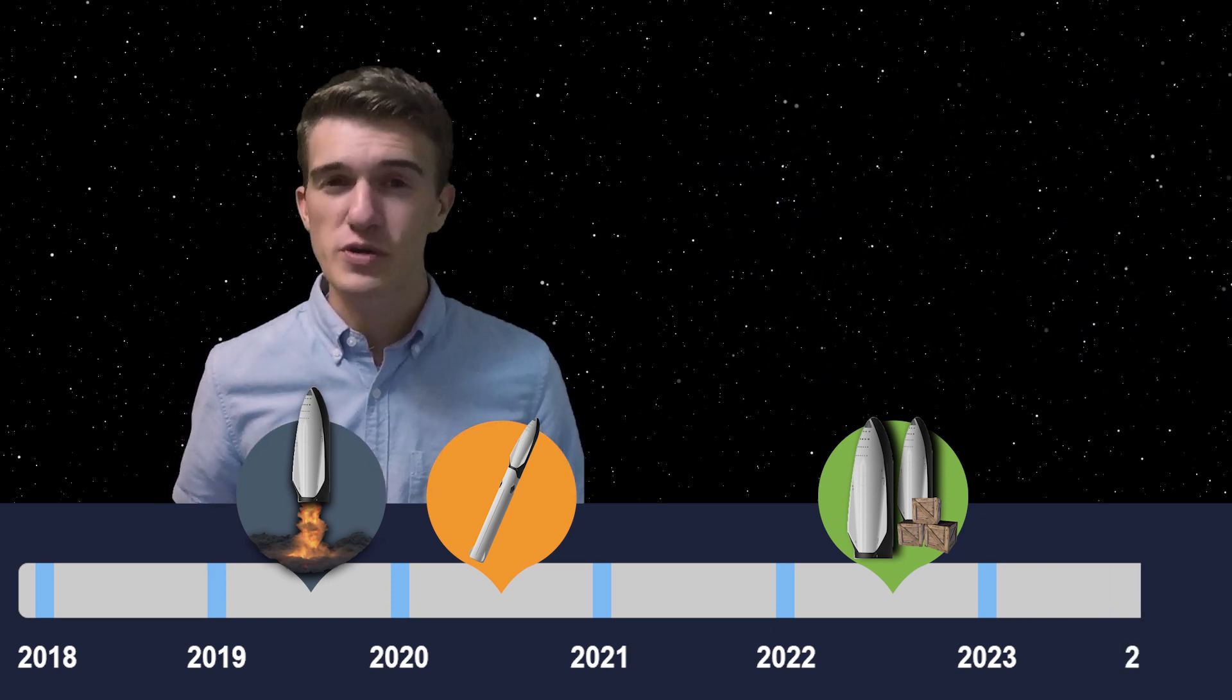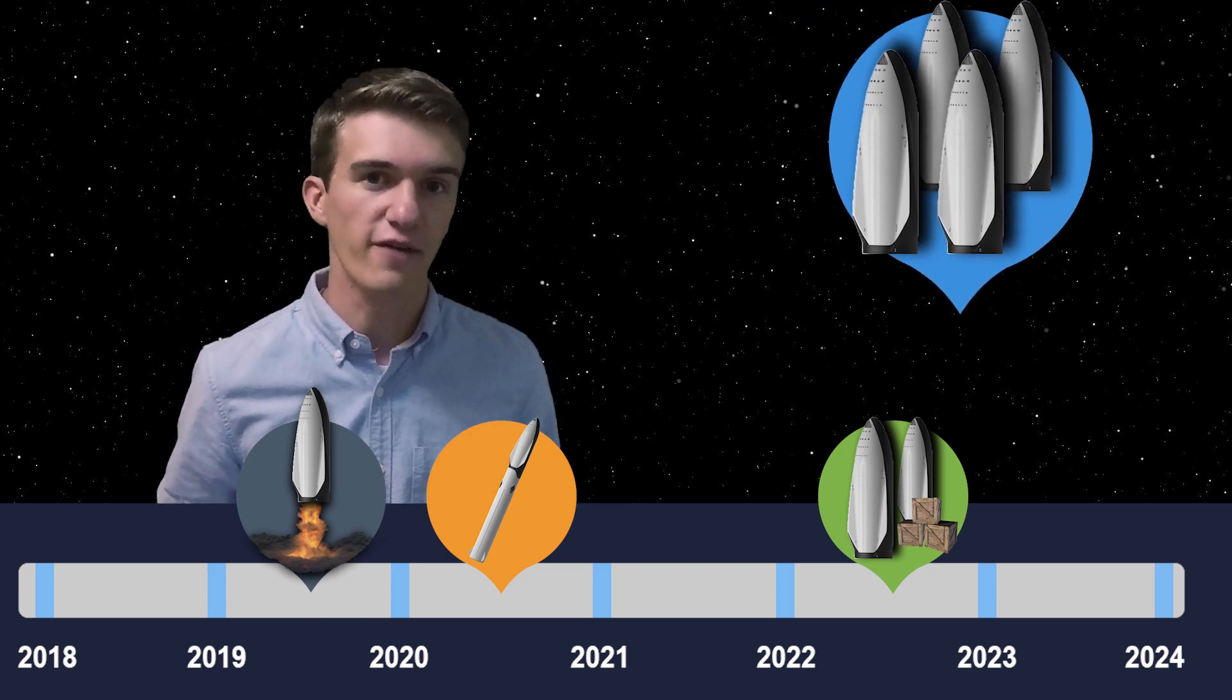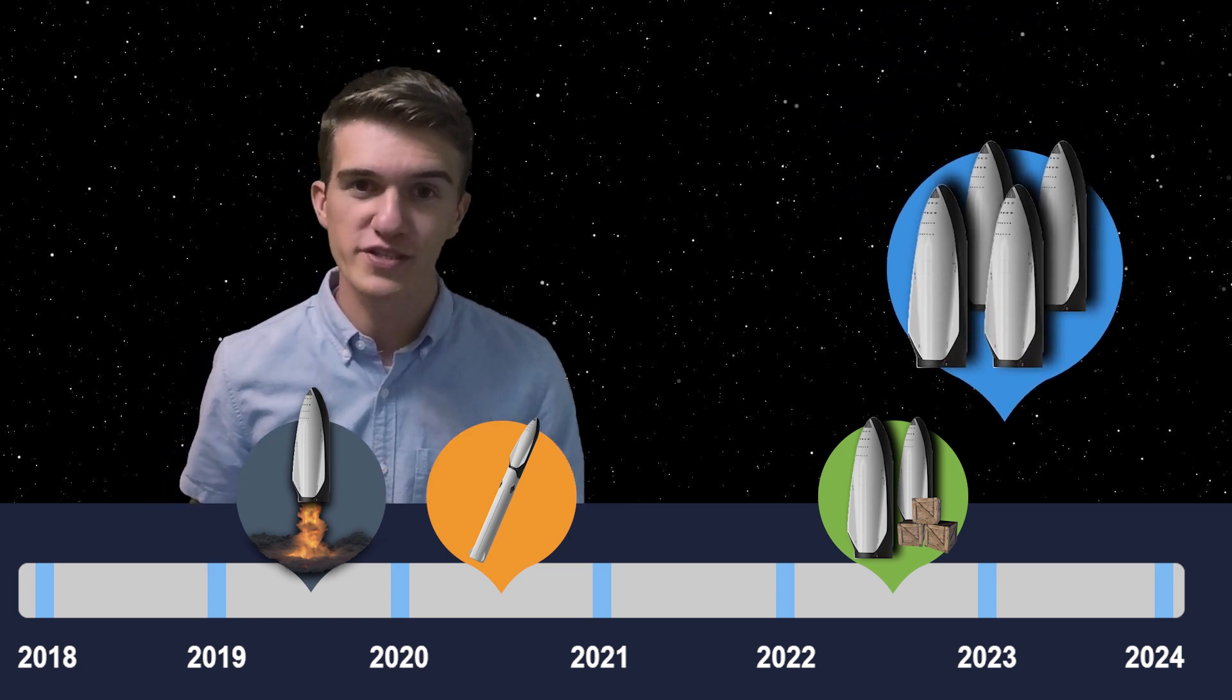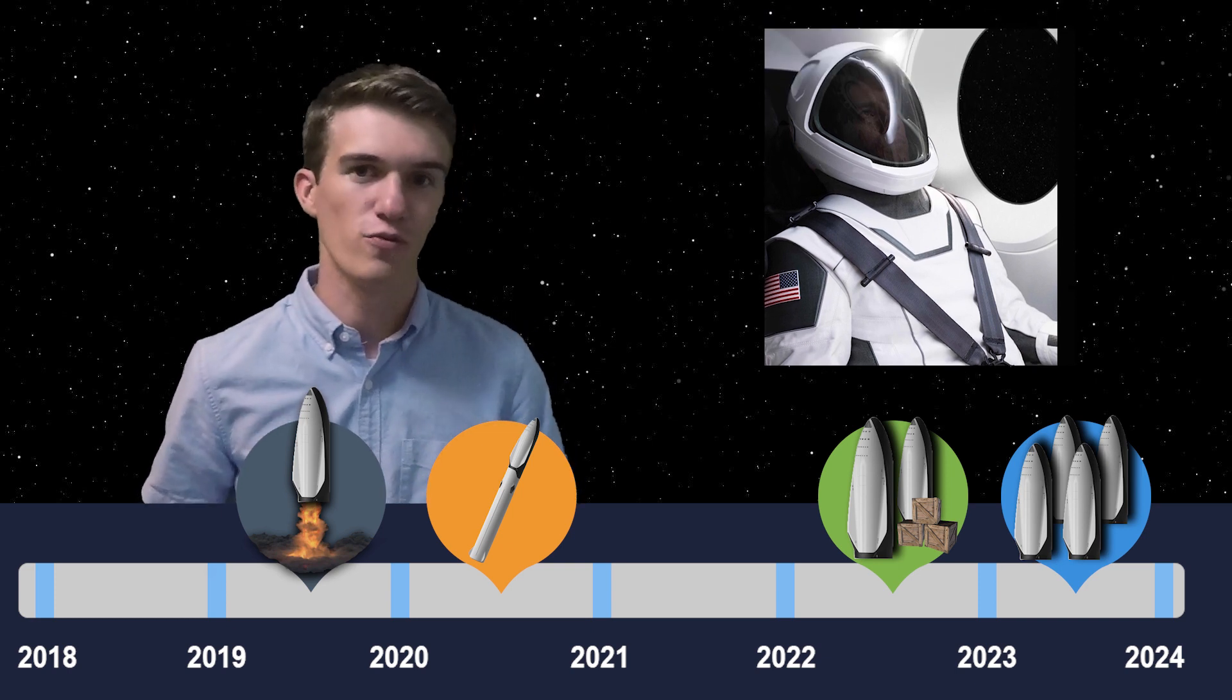Then, two years later in 2024, SpaceX plans on sending four big falcon spacecraft, two more which are cargo missions, and two which are crewed missions, meaning they will have astronauts on board.